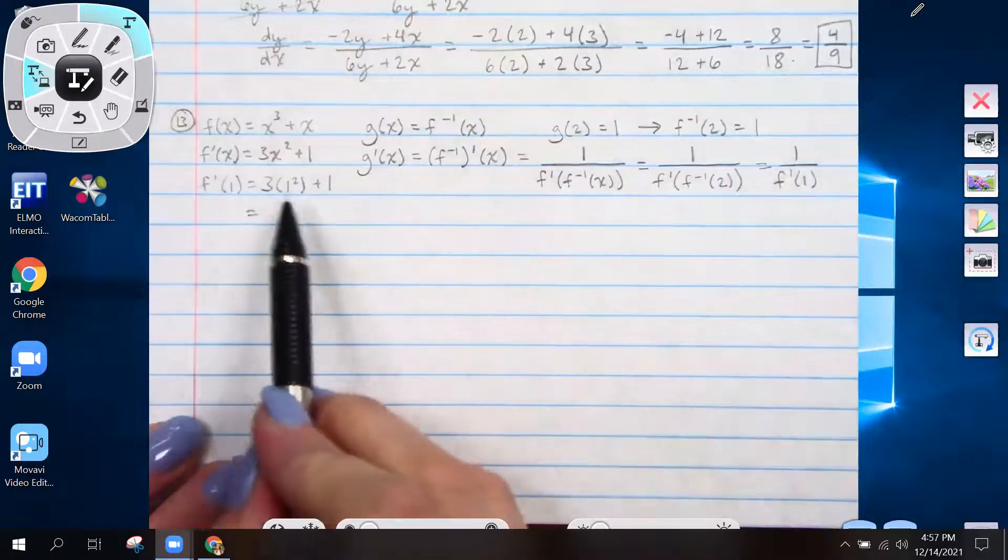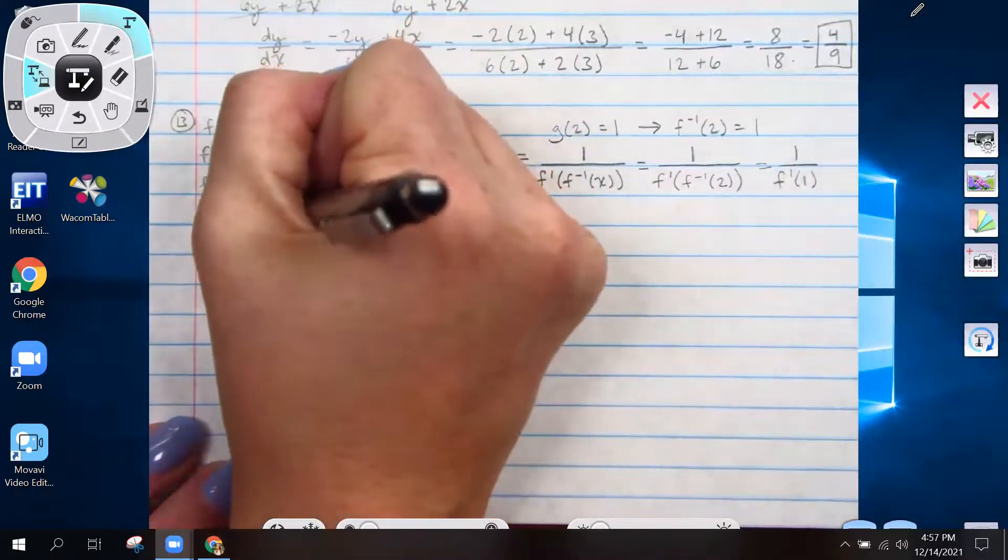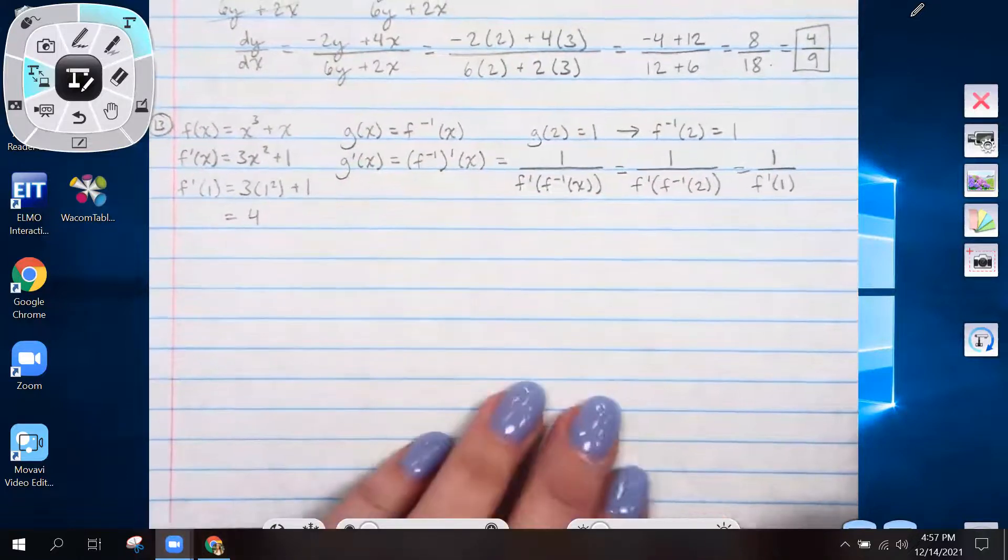1 squared is 1 times 3 is 3 plus 1 is 4. So f prime of 1 is 4.